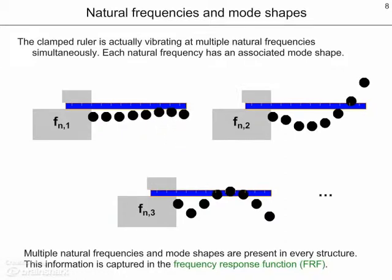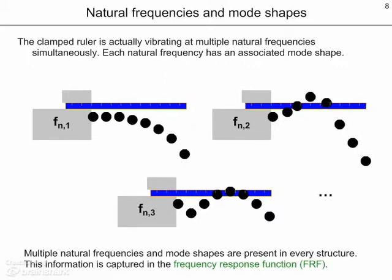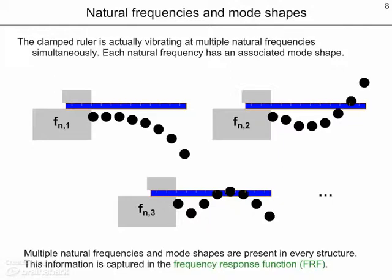In the top left figure, we see the first natural frequency for this clamped ruler. In the top right figure, we see the second natural frequency, and we see that it has a different shape as it deflects. In the bottom figure, we see the third natural frequency vibration and its corresponding mode shape. These multiple natural frequencies and mode shapes are present in every structure, including our tool, holder, spindle, machine combination, and this information is captured in frequency response functions.